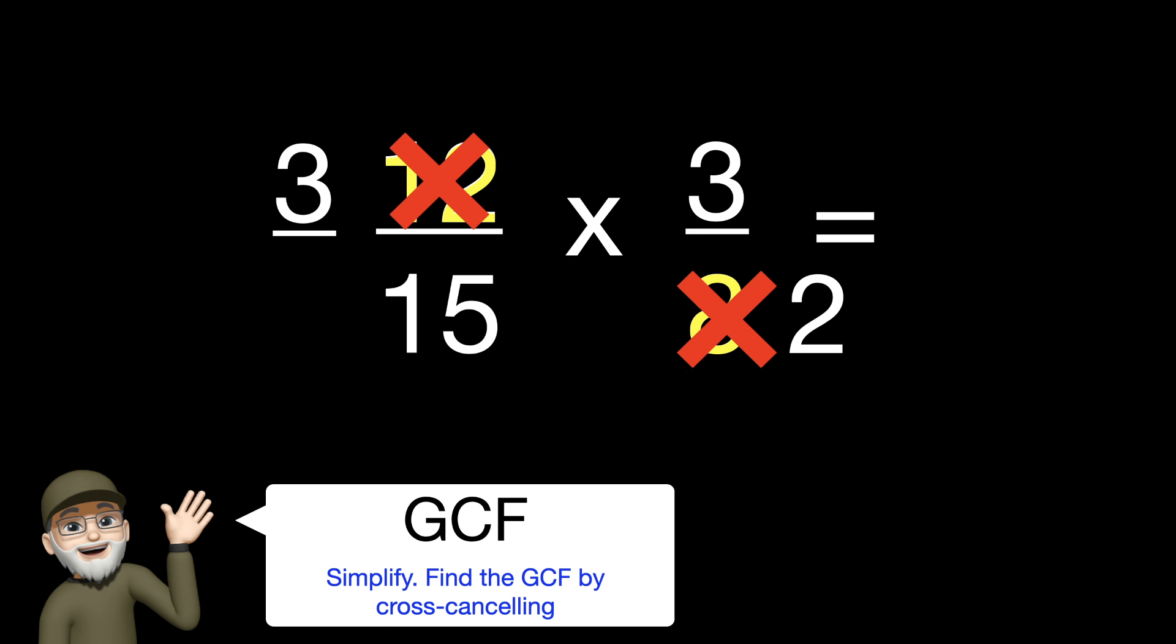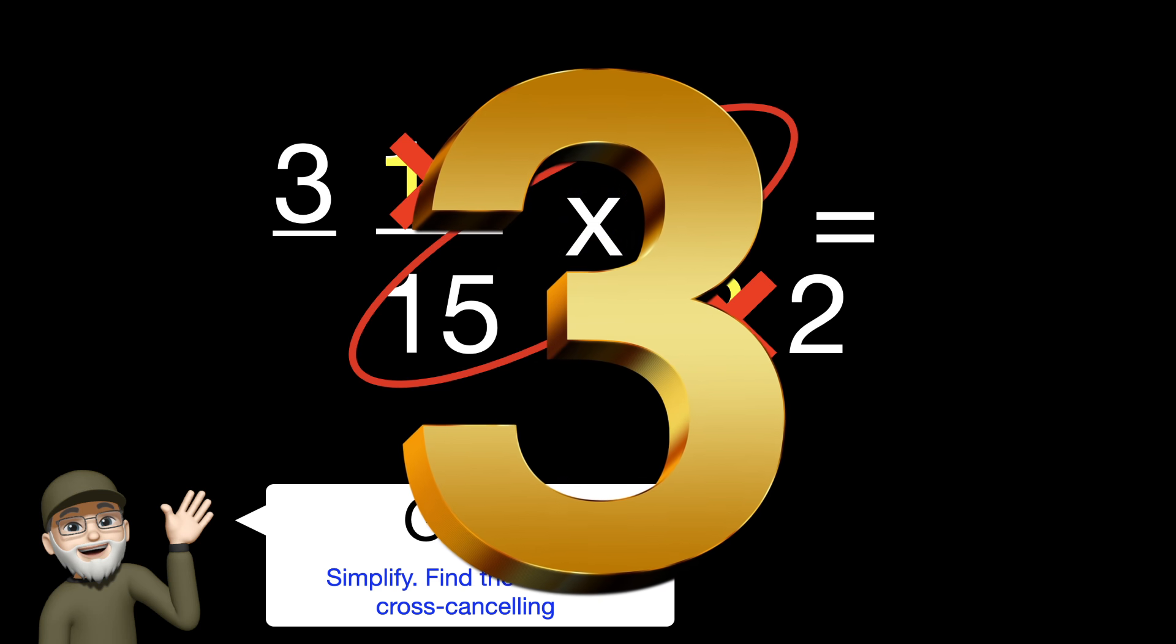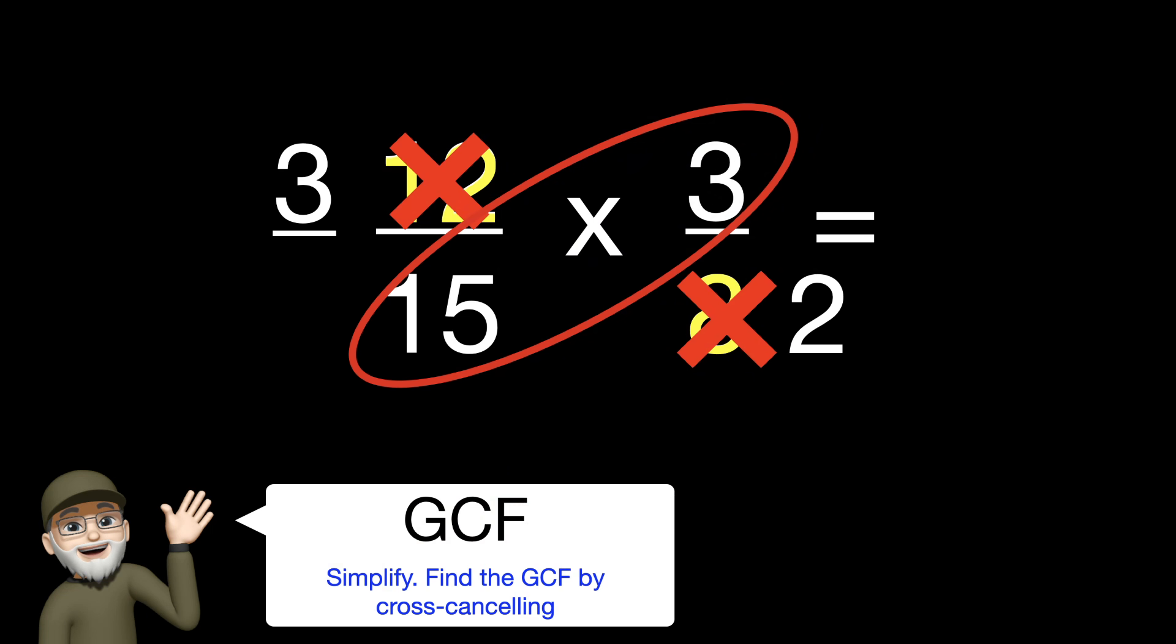Now we will go to the 15 and the 3. What is the greatest common factor for those two? That would be 3. Let's start at the top with the 3. 3 divided by 3 is equal to 1. We'll cancel out the 3 and rewrite that as 1.